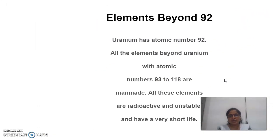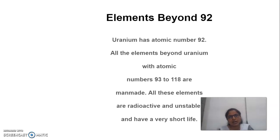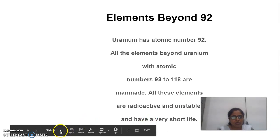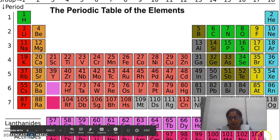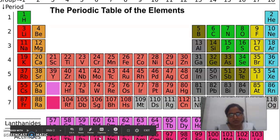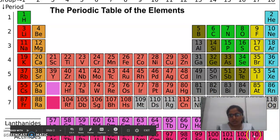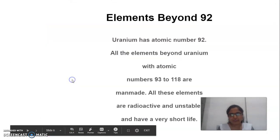Next, we will see elements beyond atomic number 92. Uranium has atomic number 92. All the elements beyond uranium, with atomic numbers 93 to 118, are manmade elements. These elements are radioactive and unstable and have a very short life. The 92 elements up to uranium are found in nature, and beyond 92 up to 118, all those elements are manmade.